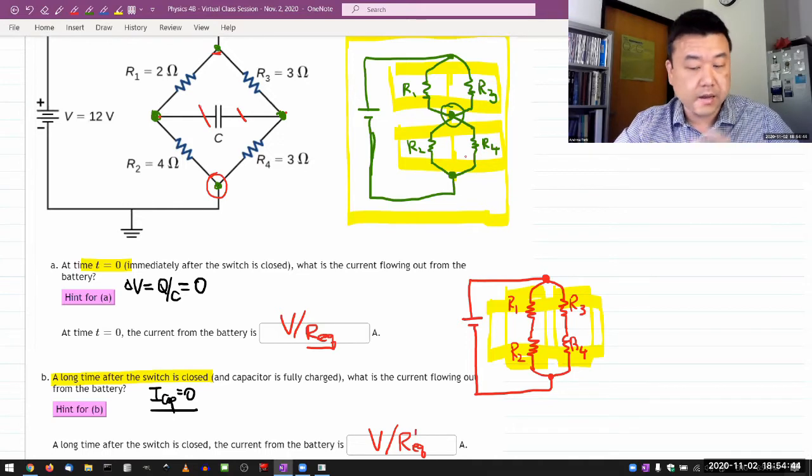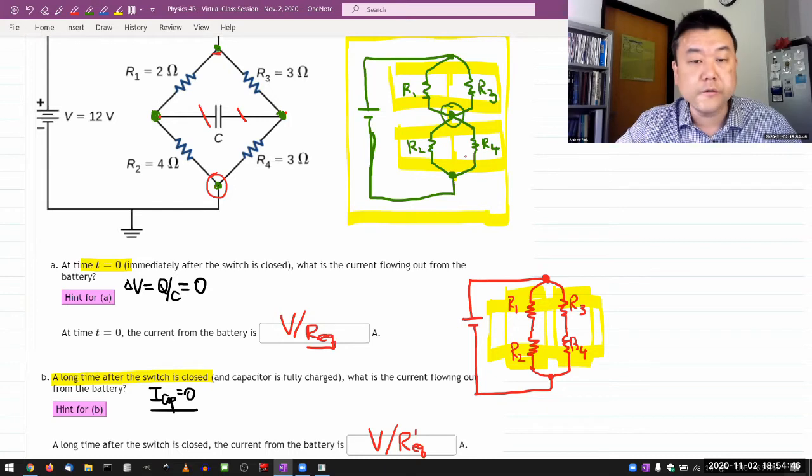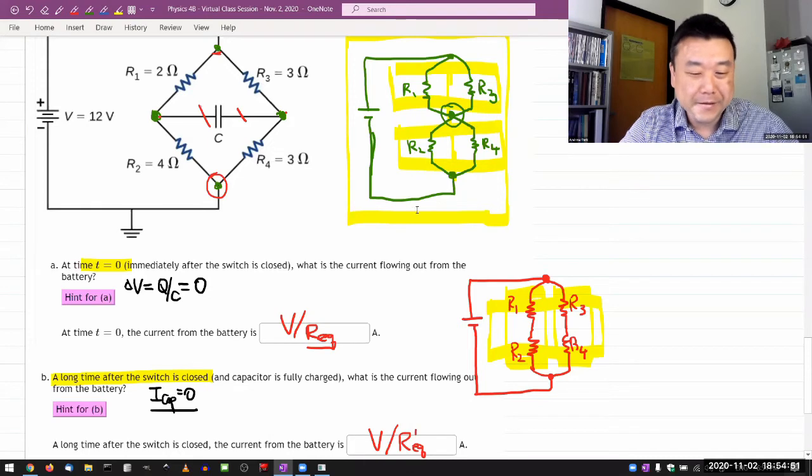And the answer here is the voltage of the battery divided by that equivalent resistance prime. It's going to be a different value than part A, because when you have these four resistors and the order in which they add is parallel then series, that will matter.